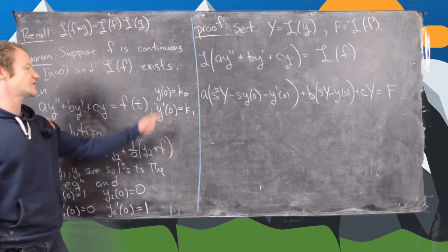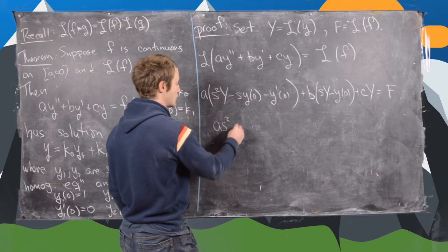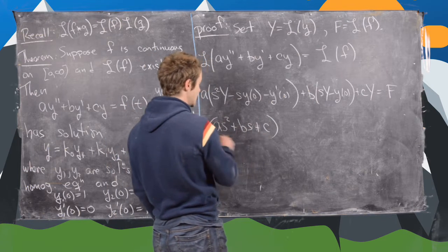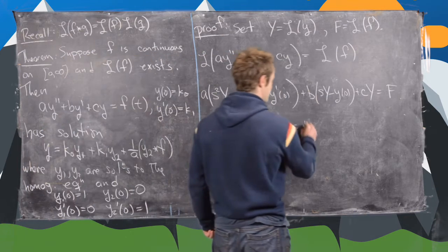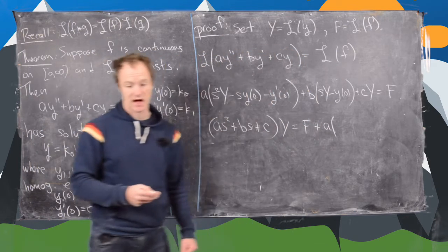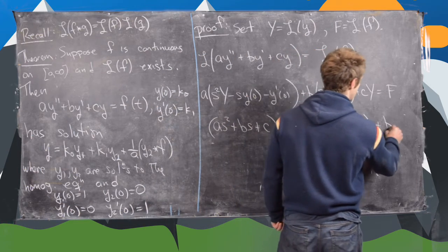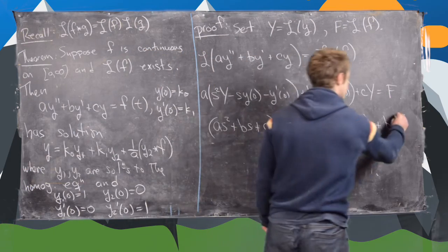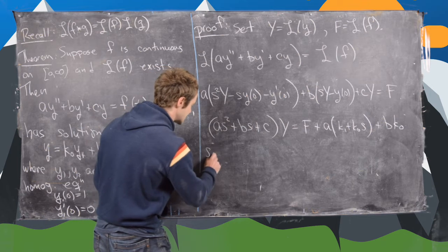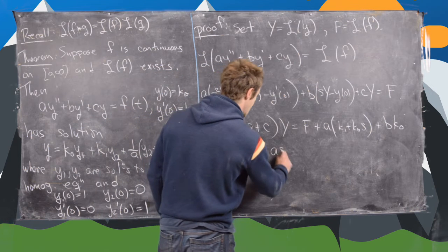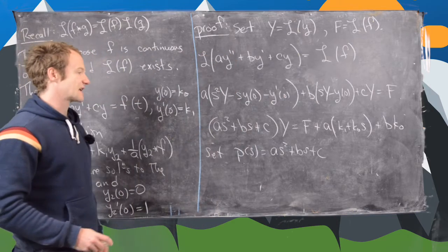Using the initial conditions, we can simplify this to: (As² + Bs + C)·Y = F + A·(k1 + k0·s) + B·k0. Now let's set P(s) = As² + Bs + C, which is the characteristic polynomial.